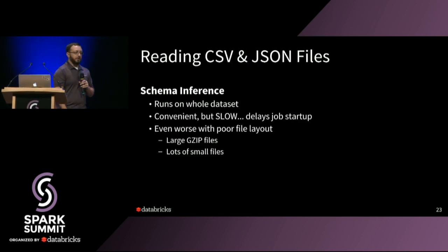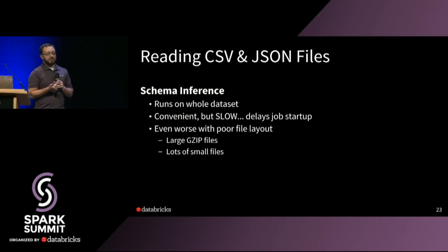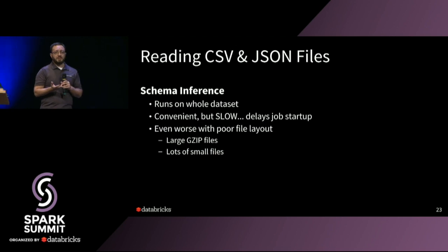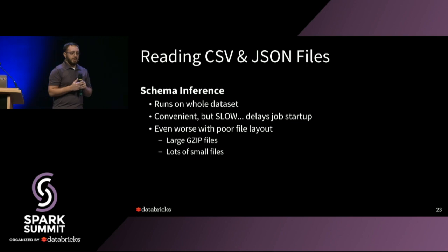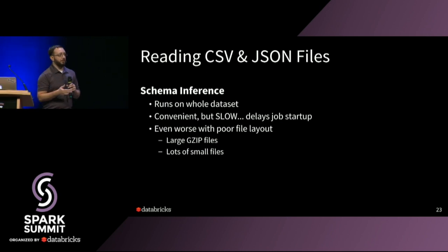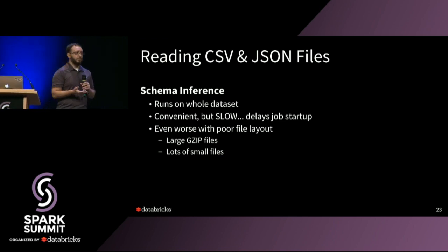Another benefit of tables is access to additional statistics for the cost-based optimizer, which you can't get from using just files. With files, you only get file size statistics — useful for broadcast joins, but not beyond that for query planning. With tables you can use both the SQL and DataFrame API; with files you can only use the DataFrame API unless you define a temp view. One issue I see a lot with new users is dealing with CSV and JSON files — schema inference will scan the whole dataset, which is convenient for small data but extremely slow for multi-gigabyte or terabyte datasets. It gets really bad with large gzip files or lots of small files.